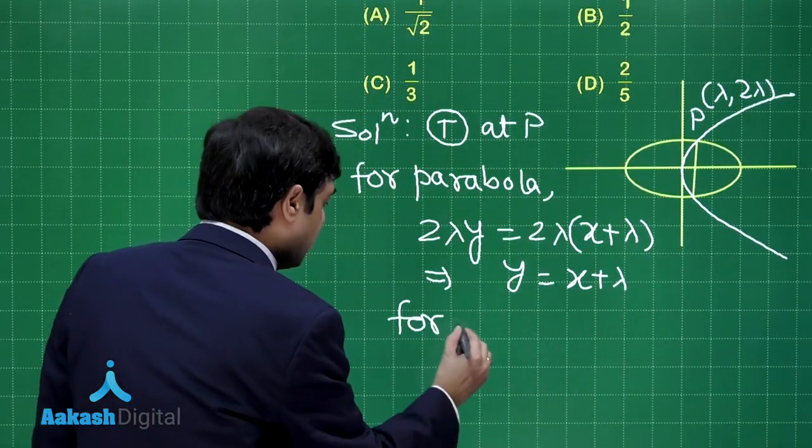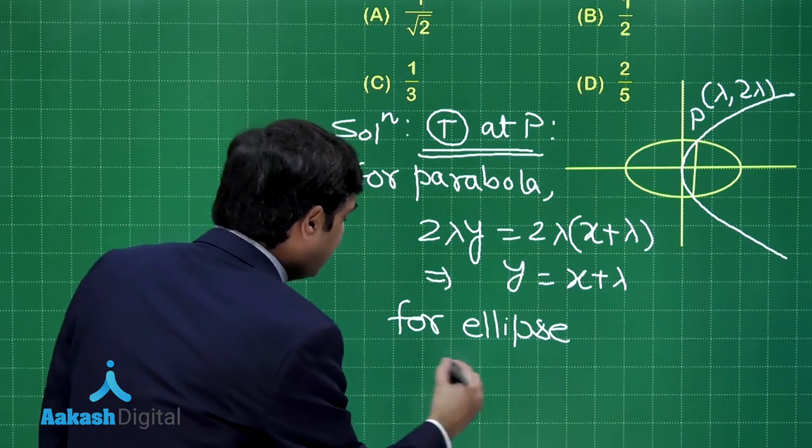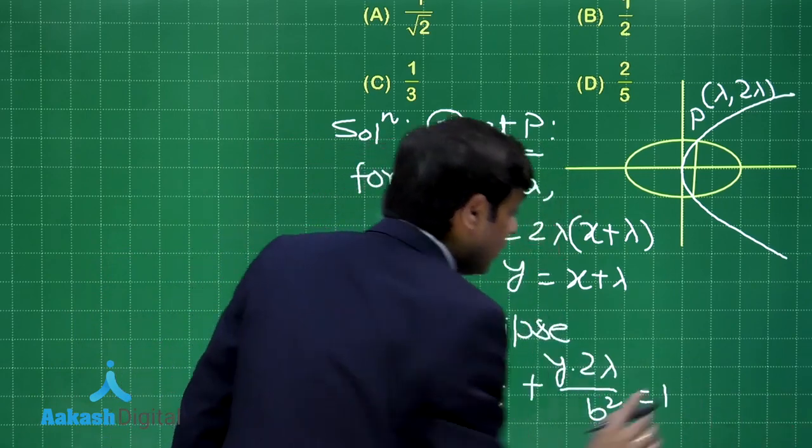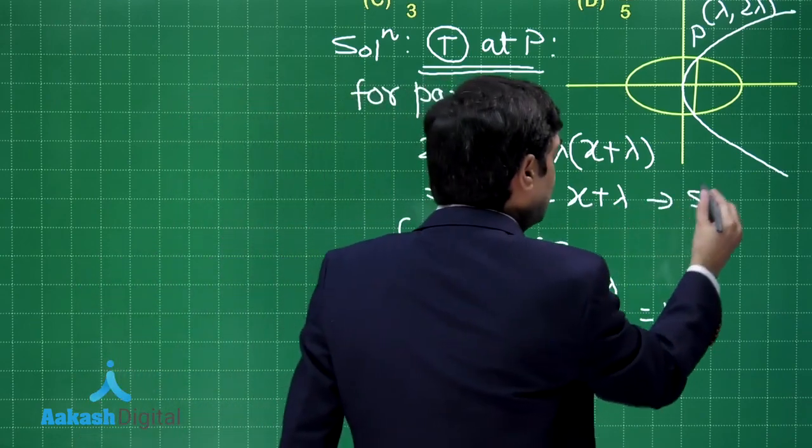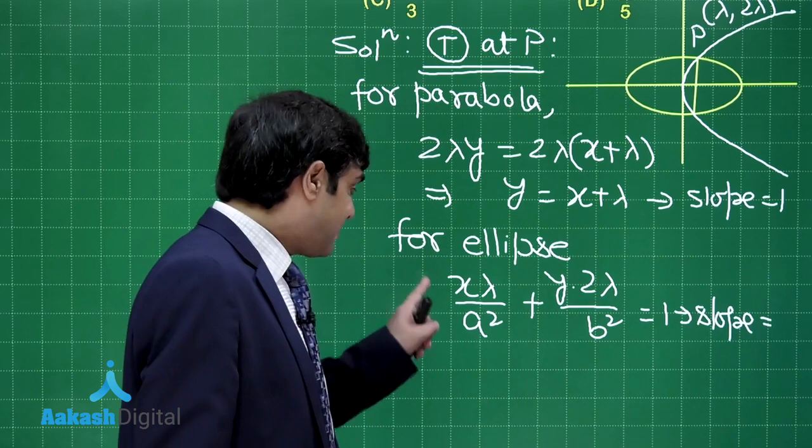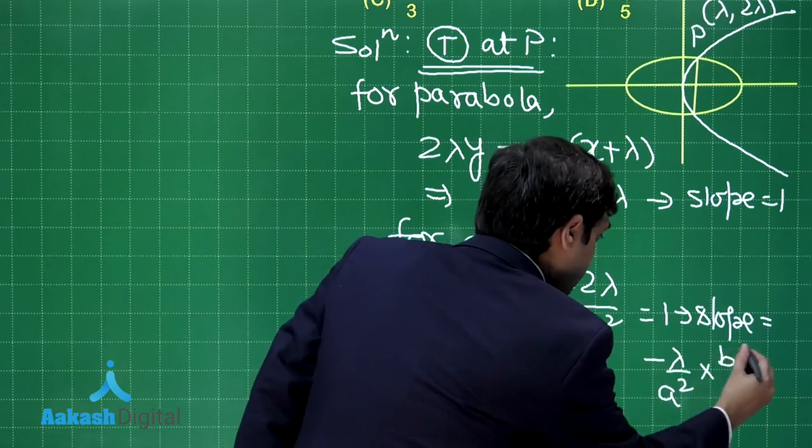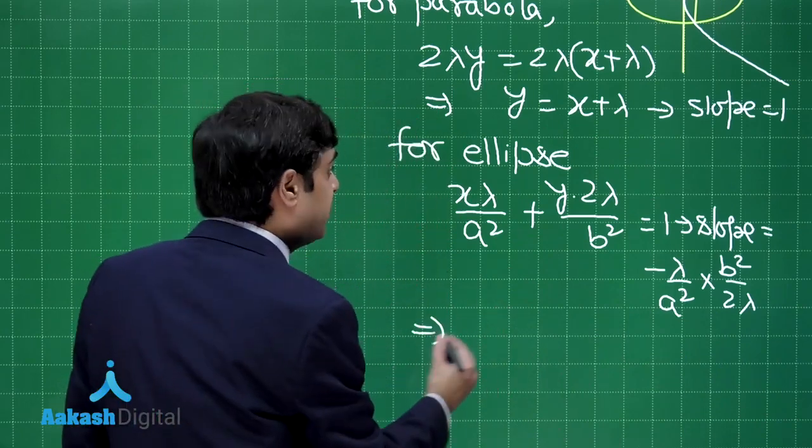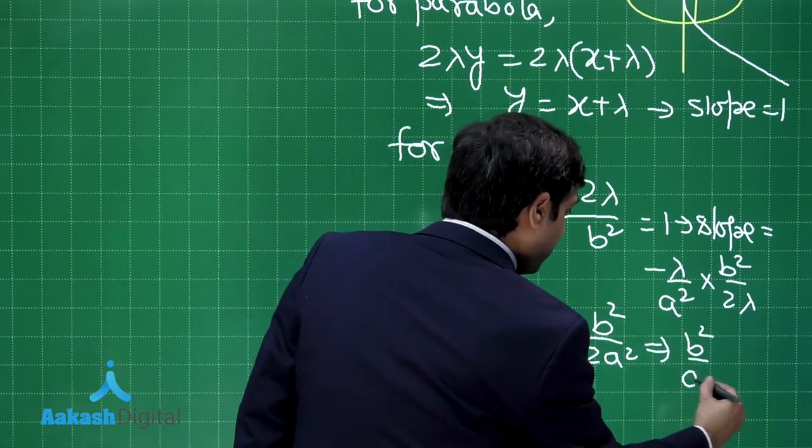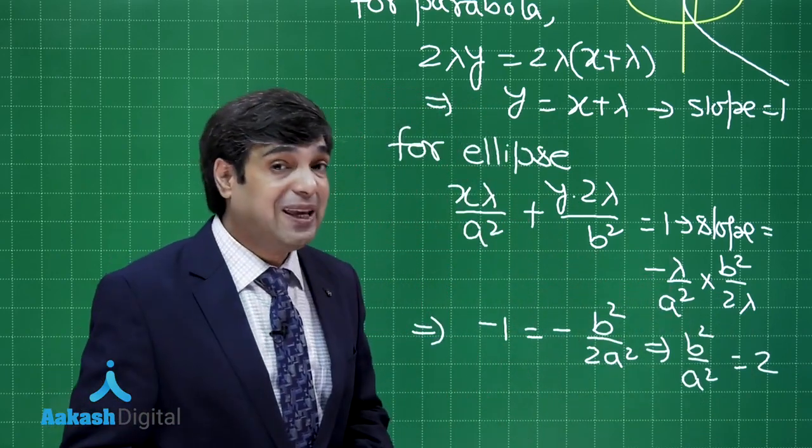Now move on to ellipse. For ellipse, I am talking about tangent at P again. For ellipse, it will be x into lambda upon a square plus y into 2 lambda upon b square is equal to 1. Since the two tangents are perpendicular, from here you have slope is equal to 1 and from here you have slope is equal to minus lambda upon a square multiplied by b square upon 2 lambda. These two are perpendicular. That means minus 1 is minus b square upon 2a square or b square upon a square is equal to 2.